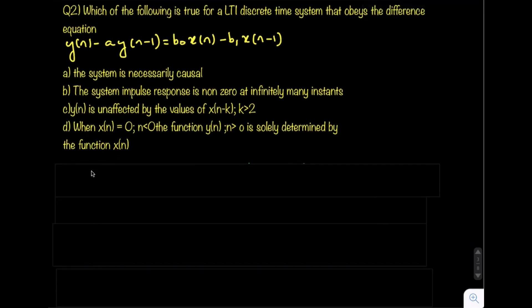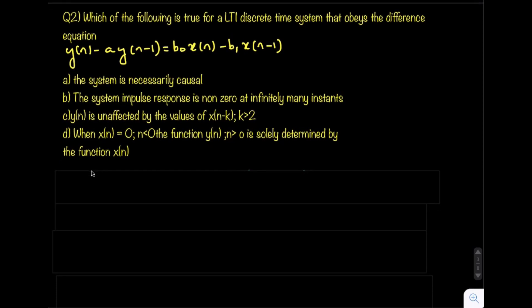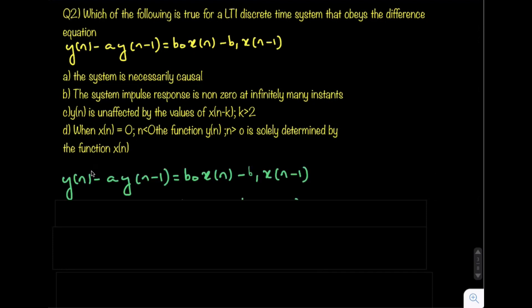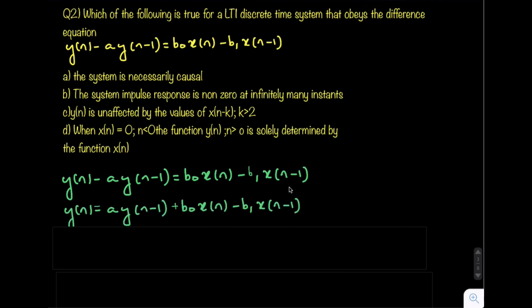Let us rewrite the difference equation. We have y(n) - a·y(n-1) = b₀·x(n) - b₁·x(n-1). Solving for y(n) by moving a·y(n-1) to the other side gives: y(n) = a·y(n-1) + b₀·x(n) - b₁·x(n-1).